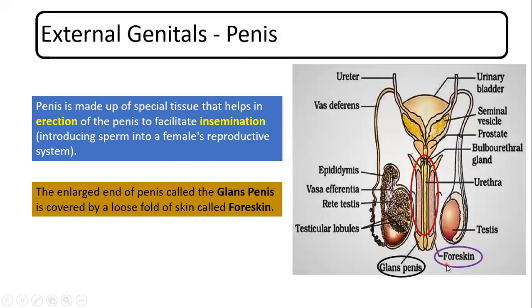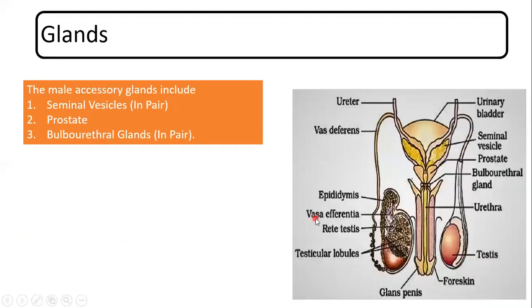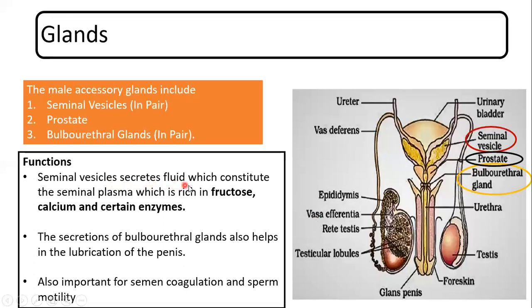The fourth and last part of the male reproductive system is glands. Three major glands are present: seminal vesicle, prostate, and bulbourethral gland. The seminal vesicles secrete fluid constituting the seminal plasma, which is rich in fructose, calcium, and certain enzymes. Along with the prostate, it also produces fluid responsible for making semen. The bulbourethral gland helps in the lubrication of the penis, and the semen provides nourishment and motility to the sperms.